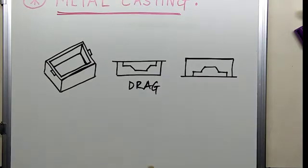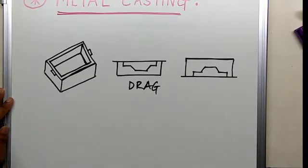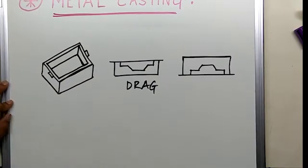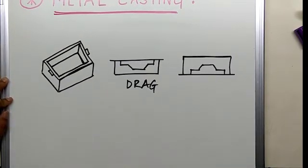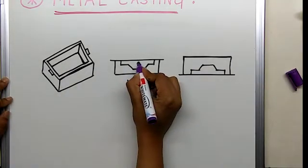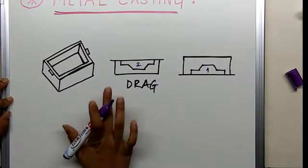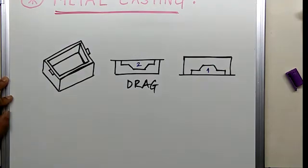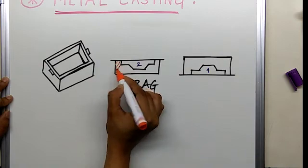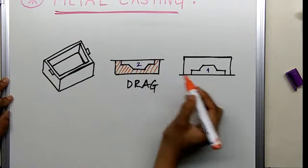Alright, so these are your COPE and DRAG boxes which are hollow. And first the patterns are placed in these boxes. After placing the patterns, this is pattern number 2, this is pattern number 1. After placing these patterns, sand is filled into the boxes around the pattern.